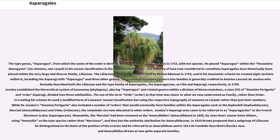Earlier circumscriptions of Asparagales attributed the name to Bromhead (1838), who had been the first to use the term Asparagales. The type genus, Asparagus, from which the name of the order is derived, was described by Carl Linnaeus in 1753 with ten species. He placed asparagus within the Hexandria Monogynia — six stamens, one carpel — in his sexual classification in the Species Plantarum.